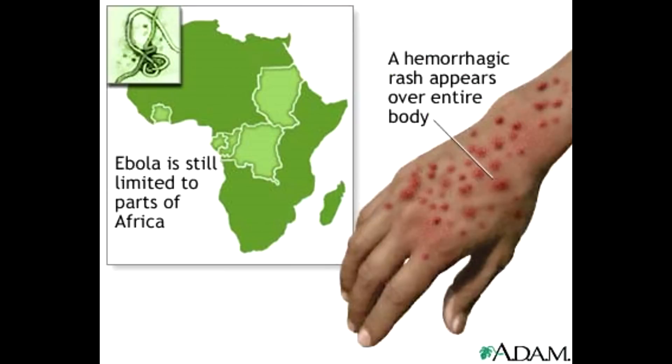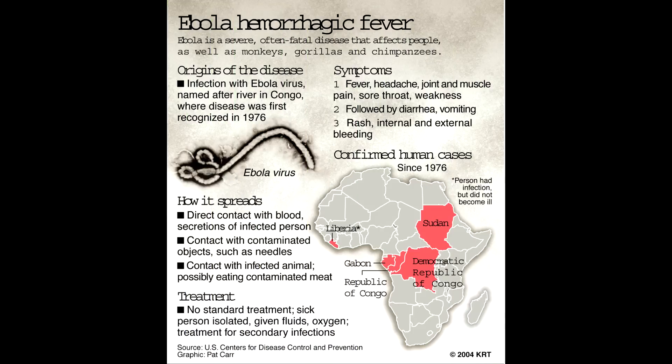The WHO is calling this the largest outbreak ever recorded of the disease. But there have been sporadic outbreaks before, mainly in Uganda, the DRC, Sudan, and Gabon. The worst previous outbreak, in 2000 in Uganda, saw 425 people infected, of which just over half died.